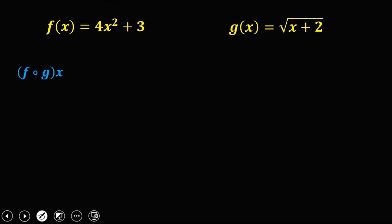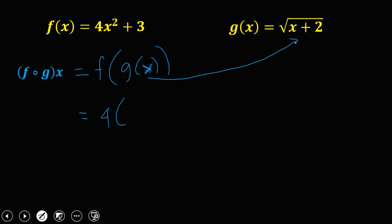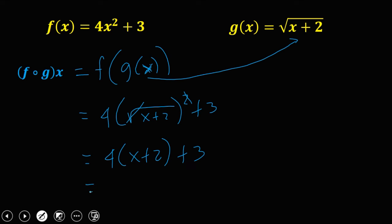Now for the composition of functions, f(g(x)): substitute g(x) as x in f(x). So we have 4 times (√(x + 2))², which cancels the square root, giving 4(x + 2) plus 3. Distributing: 4x + 8 + 3. The final answer is 4x + 11.